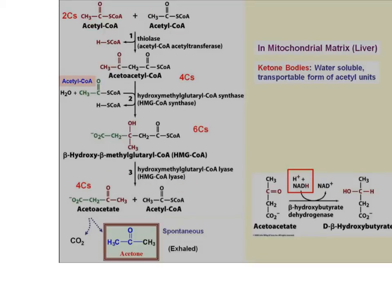Acetoacetate is a ketone body. Depending on the amount of NADH available, acetoacetate and beta-hydroxybutyrate are usually produced in about equal amounts. Acetone is formed by the spontaneous decarboxylation of acetoacetate — you have four carbons, and the fourth carbon is a CO₂⁻. When that CO₂ breaks off, you have three carbons. Acetone is simply exhaled.